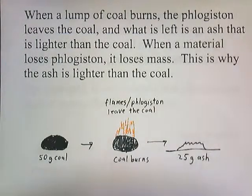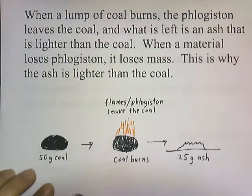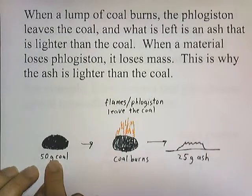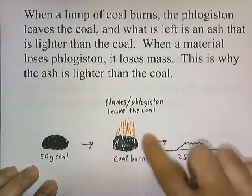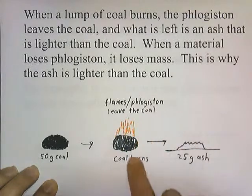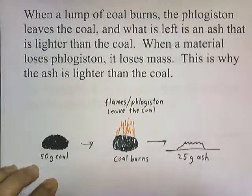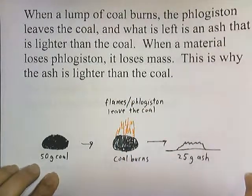When a lump of coal burns, the phlogiston leaves the coal, and what's left is an ash that is lighter than the coal. When a material loses phlogiston, it loses mass. So if you started out with, say, 50 grams of coal and the coal burned, the flames coming out are the phlogiston leaving. The remaining ash is lighter than the coal you started with.